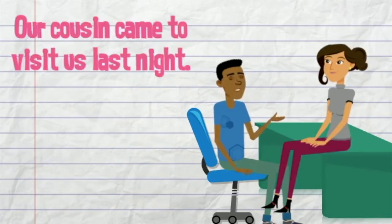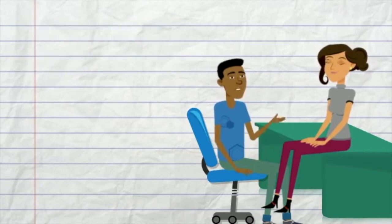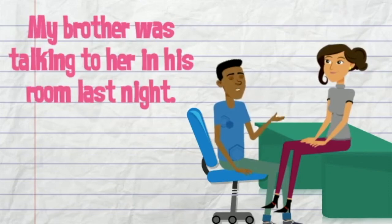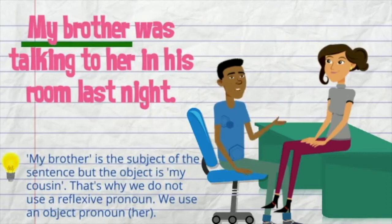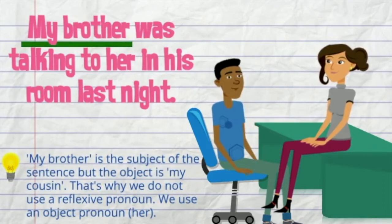Our cousin came to visit us last night. My brother was talking to her in his room last night. In this sentence, my brother is the subject, but the object is my cousin. In this case, we do not use a reflexive pronoun — instead, we use an object pronoun.